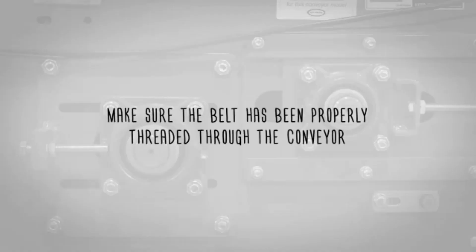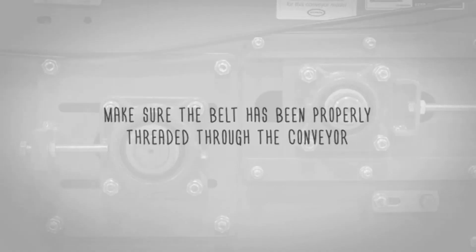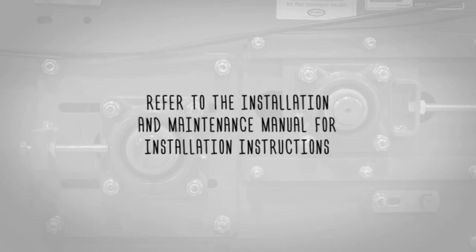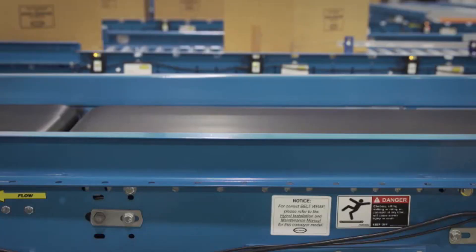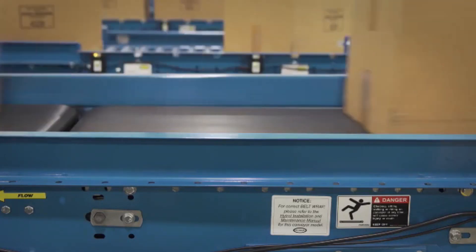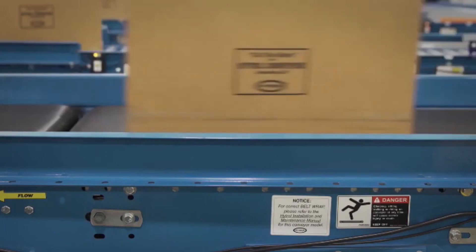Make sure the belt has been properly threaded through the conveyor. Refer to the installation and maintenance manual for installation instructions. Check for improper loading. The feed should be in the direction of the belt's travel, centered on the belt and not driving against the fixed guardrail.